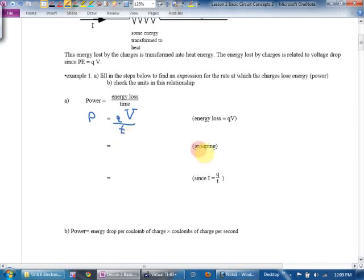And then it says grouping. We're going to write this as Q over T times V. I'm just going to say, hey, what is Q over T? And what is Coulomb's per second? Do you remember from lesson one what we called that? Current. As it turns out, this is current. Power is going to end up being IV or VI.